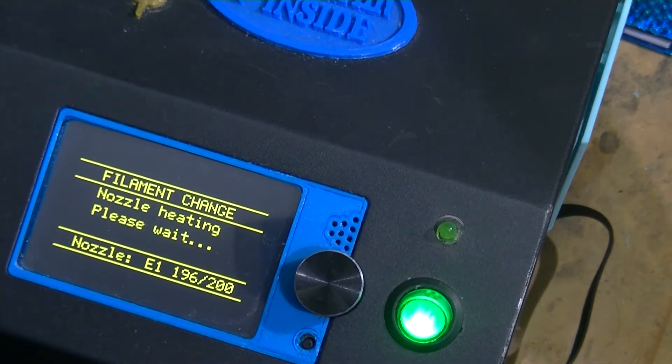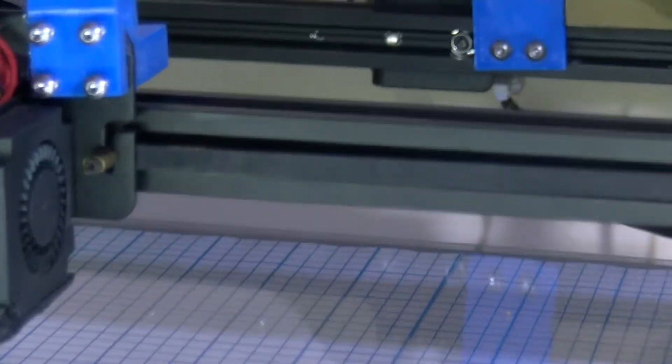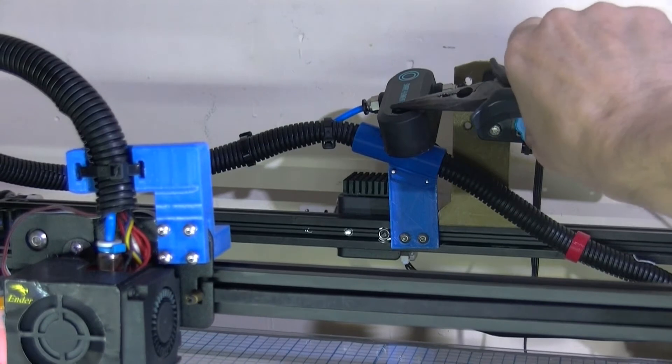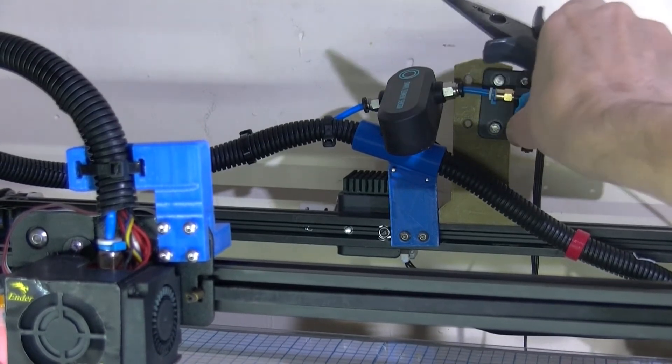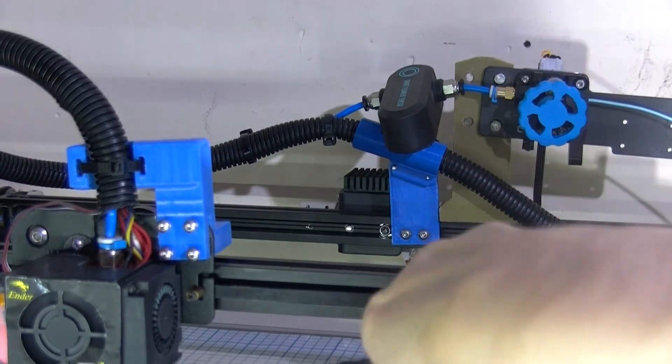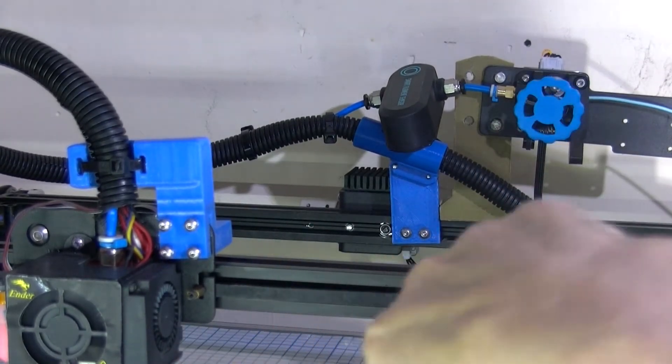So there's filament coming out the nozzle. To make sure that the wheel inside here is turning - well, I don't know if it is or not - but turn this wheel and it does feed filament out the nozzle here.